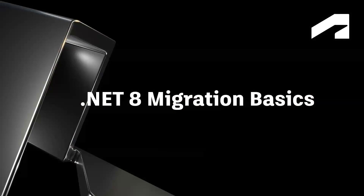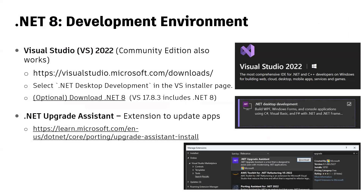Let's review some of the basics of migrating Revit add-ins to .NET 8. We suggest using Visual Studio 2022 for your .NET 8 development; recent versions include the .NET 8 SDK as part of the install. If you have an older version, you can update Visual Studio or independently install the .NET 8 SDK. The Microsoft .NET Upgrade Assistant is a Visual Studio extension that will help you update your applications to newer releases of .NET, and we recommend using it to update your Revit add-ins.